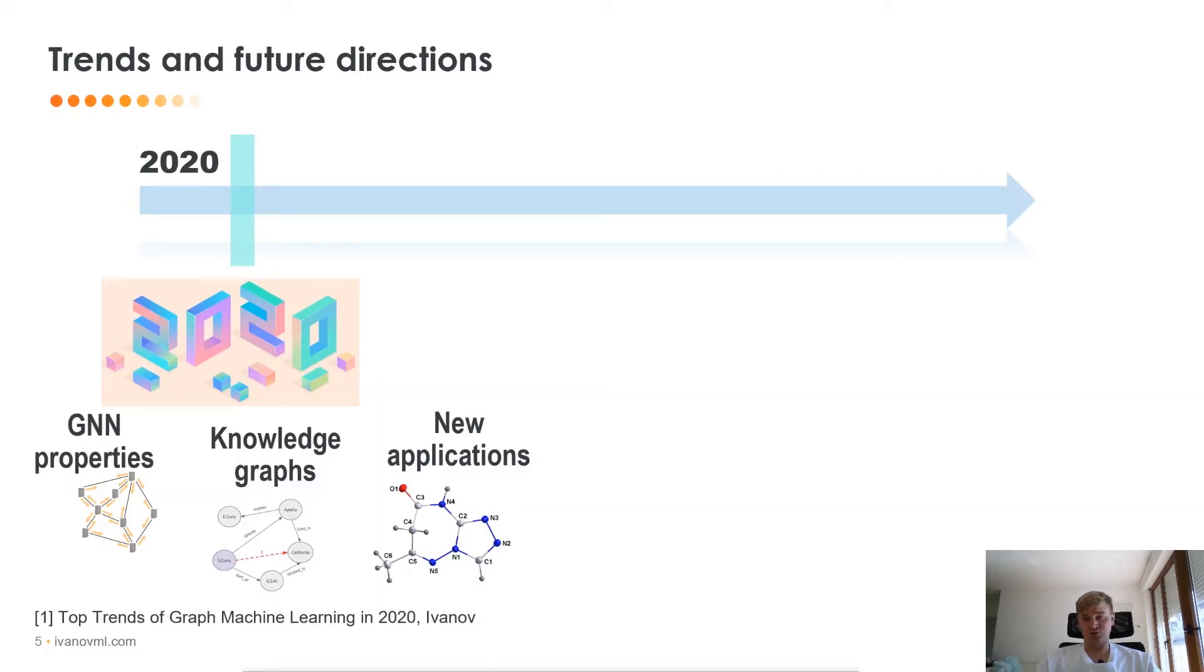The second one was knowledge graphs. How can we use the facts about this world to facilitate some applications, for example, recommendations or chatbots and so on. And the final one was applying graph neural networks for different domains, different applications where they haven't been used before. For example, I already described how you can use GNN for autonomous driving or for drug discovery. But there are many more applications that people have tried, for example, fixing bugs in software or optimizing the computational graphs of TensorFlow.